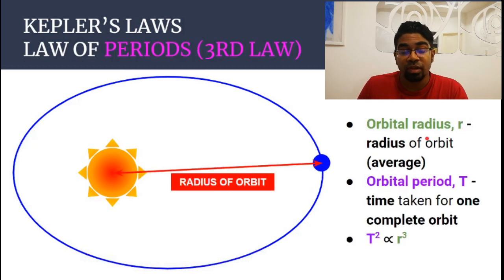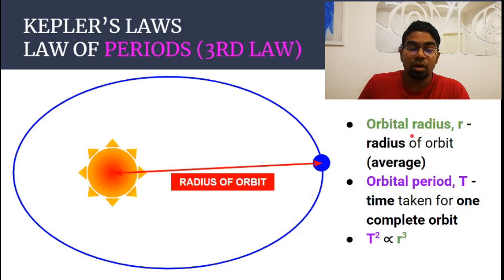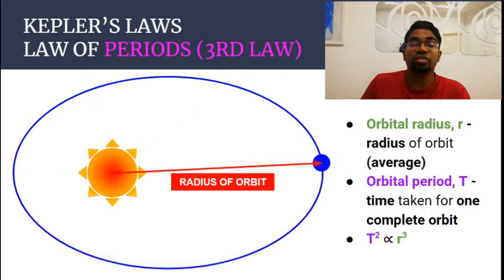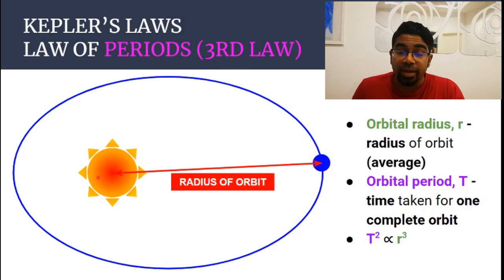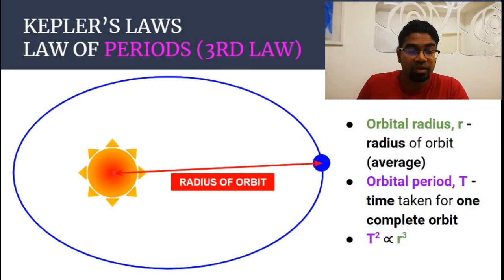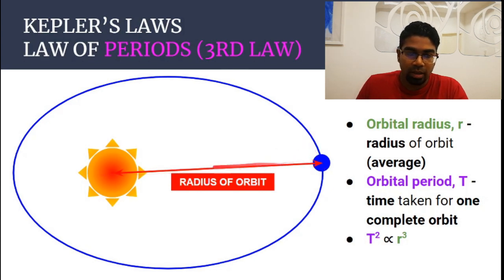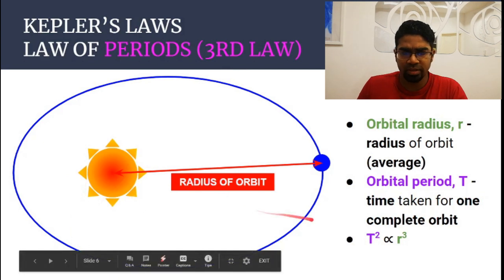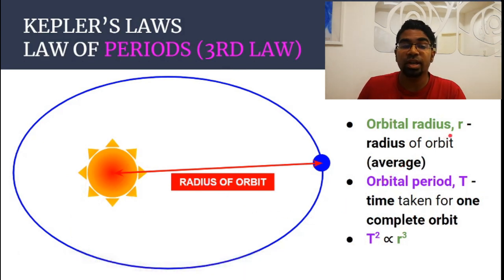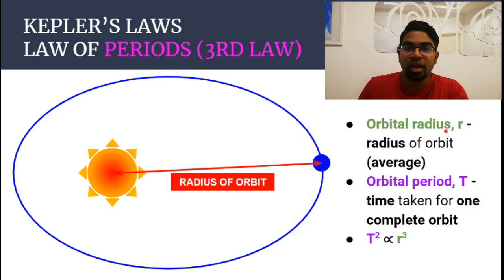Kepler's third law is the law of periods. We need to understand two terms first. Orbital radius is the radius of the orbit. Since it is an elliptical shape, the radius varies, so we take an average of all the radii — measured from the center of the sun to the center of the planet. So when we talk about orbital radius in the third law, we are talking about the average radius, assuming it is circular.